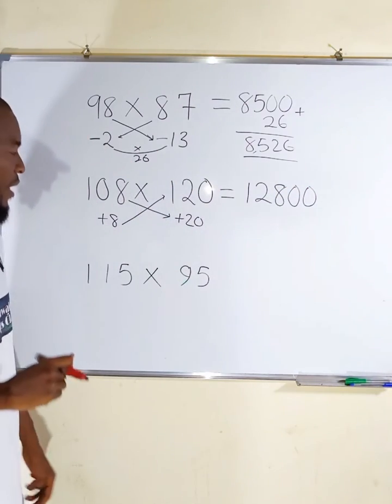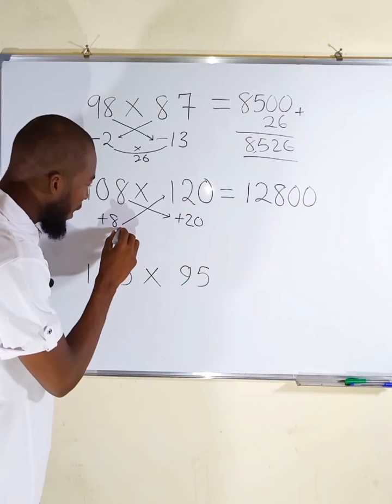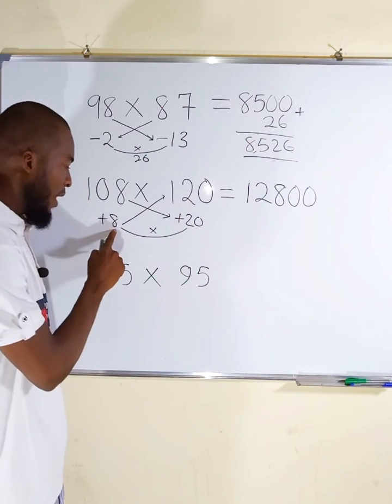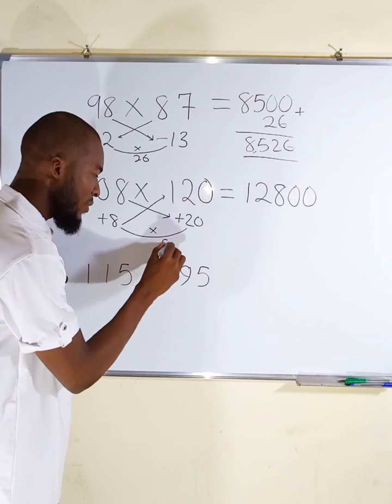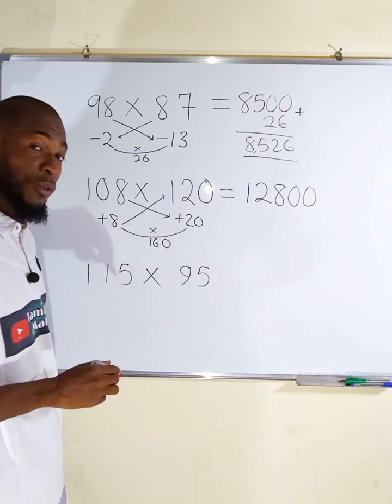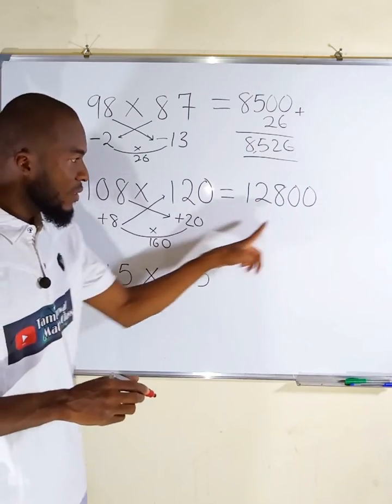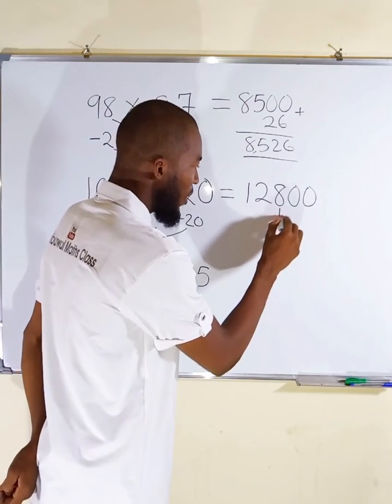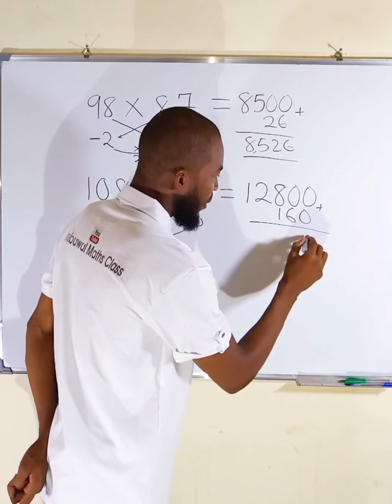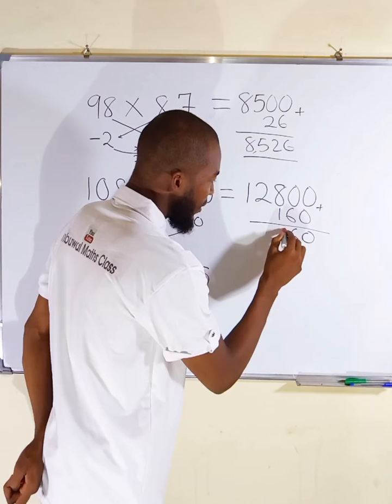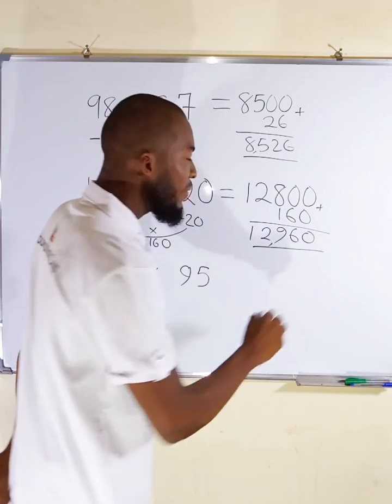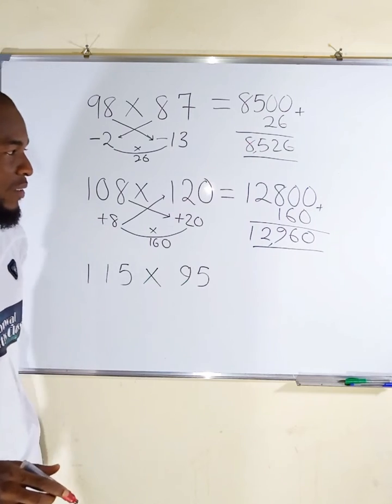Next, multiply 8 by 20 together. You can see 8 times 0 is 0, 8 times 2 is 16, so we have 160. This 160 is added here. 160 plus 12800 gives us 12,960.